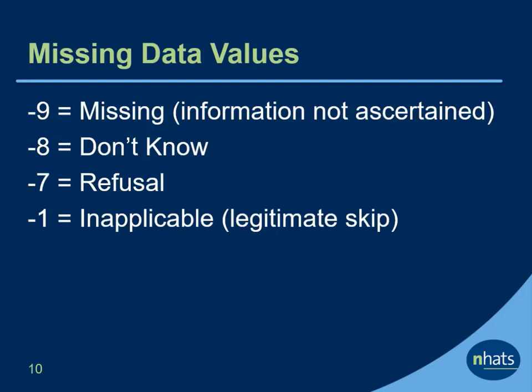NHATS has a set of missing data values that are used consistently across data files. Negative 9 always indicates that information is missing because it was not ascertained. Negative 8 indicates that the respondent did not know the answer. Negative 7 indicates that the respondent refused to give an answer. And negative 1 indicates that the item was inapplicable or a legitimate skip.